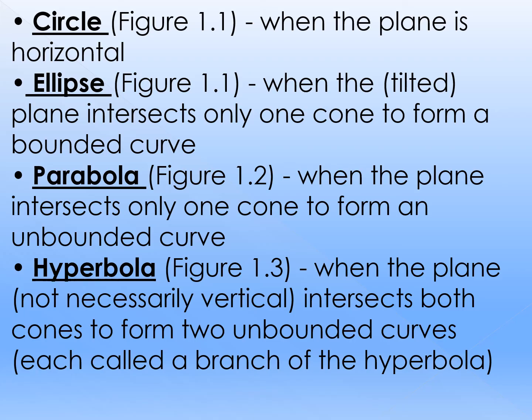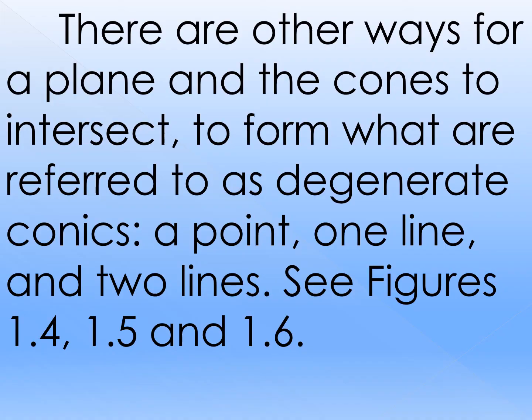Now, the question for number five on our first activity: what if the plane figure cuts the double nappe cone and it passes through the vertex? Would you think you can form the same type of conic sections? Of course not — we cannot form the same type of conic sections, because that is what we call the degenerate cases. There are other ways for a plane and the cones to intersect to form what are referred to as the degenerate conics. These are: a point, a line, and two intersecting lines.